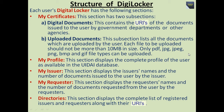Now we talk about the structure of DigiLocker. Each user's digital locker has the following sections. The first is My Certificates, which has two subsections. The first subsection is Digital Documents — this contains URIs of the documents issued to the user by government departments or other agencies. The second subsection is Uploaded Documents — this lists all documents uploaded by the user. Each file to be uploaded should not be more than 10 MB in size. Only PDF, JPG, JPEG, PNG, BMP and GIF file types can be uploaded.